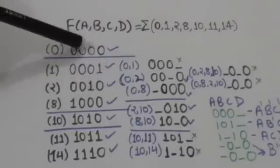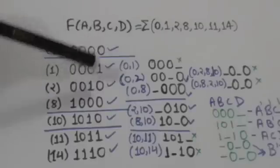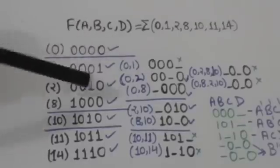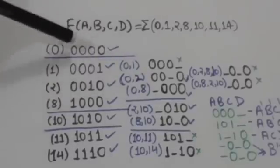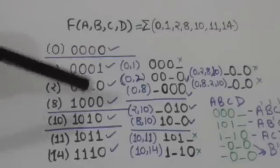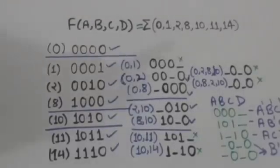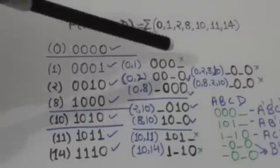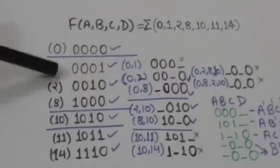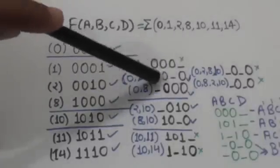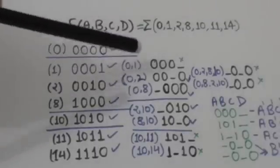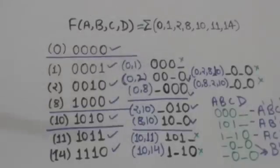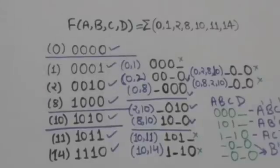Comparing further: these two numbers also differ by one bit, so we combine them and place a dash. Again, these two numbers differ only by the leftmost bit, so we combine them and remove that bit, placing a dash. Here I have written the decimal equivalents of the numbers combined to form each term: 0 and 1, 0 and 2, and 0 and 8.